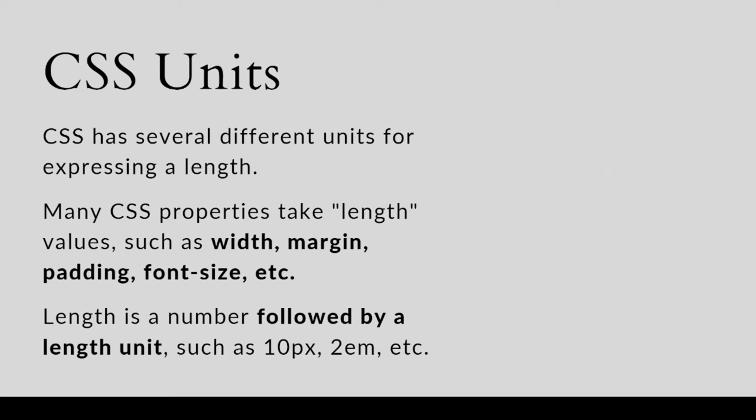CSS has several different units for expressing lengths, and many CSS properties take length as values such as width, margin, padding, font size, border, etc. Length is a number followed by a length unit, which is also known as CSS Unit, such as 10 pixels or 2em.